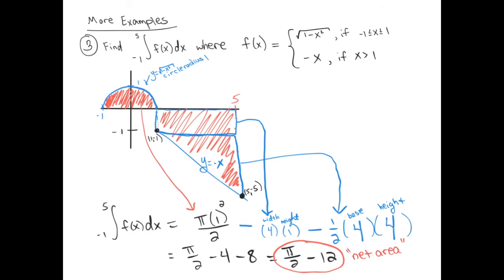We get a final answer of pi over 2 minus 12. This is a net area — about 3 over 2 minus 12 — which is overall negative. That agrees with our picture: we have a small positive area and a huge negative area, so the overall result is negative.